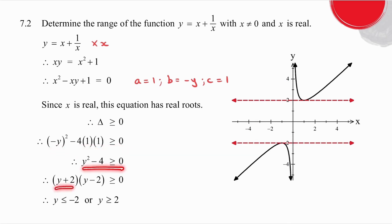Simplify. Factorize using difference of two squares. I've got a positive quadratic. My zeros are minus 2 and 2. You want to know where this is greater than or equal to 0. In other words, there and there. So it's when y is less than or equal to minus 2 or y is greater than or equal to 2. And there's the range of that function.